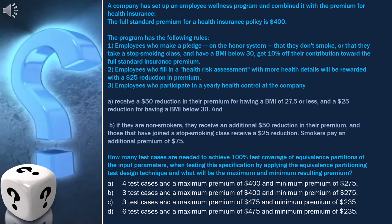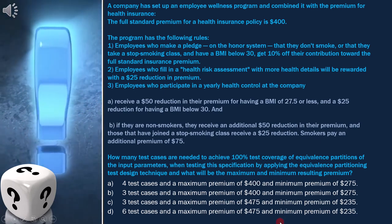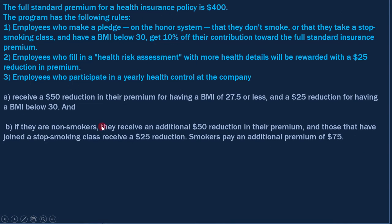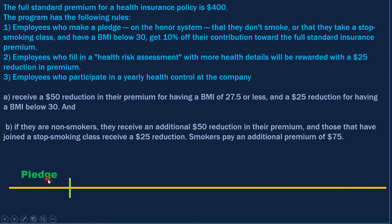For these types of questions, it's important that we draw the equivalence classes diagram. To draw the diagram, we need to refer to this data. The standard insurance policy is $400. The first condition is the employee making a pledge. Here we can make two conditions: employee making pledge and employee not making pledge. If they don't make a pledge, they will not get any discount. If they make a pledge, they will get 10% off. With this, the first condition is fulfilled.